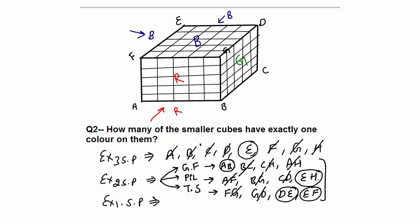So we have four edges — AB, EH, DE, and EF — each with only one color although two surfaces are painted. On each edge there are 5 cubes, but removing the corner ones leaves 3 cubes per edge, so 3 × 4 = 12 cubes with exactly two surfaces painted and only one color. For exactly one surface painted, each surface dimension is 5×5 and removing edges leaves a 3×3 = 9 cubes per surface, and with 6 surfaces that gives 9 × 6 = 54 cubes.